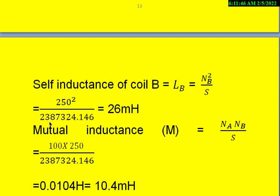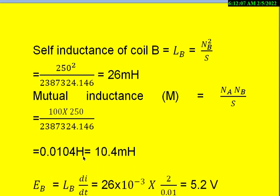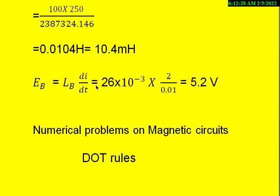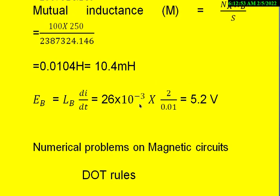So then we get 250 square divided by 2,387,324.146. Then we get 26 millihenries. So then mutual inductance M is nothing but NA, NB divided by S. So NA is nothing but 100 and NB is 250 and S is already known. Substitute that value, then we get mutual inductance between the coils as 10.4 millihenries. So once we know the inductance of the coil B, we can calculate what is the induced EMF in the coil B. That is EB is nothing but LB into dI by dT. And it is given that the change in current in 0.01 seconds is 2 ampere. So substitute that 2 divided by 0.01 and multiply that with the self-inductance of the coil B. That is 26 millihenries. That is 26 into 10 power minus 3. Once we simplify that we get 5.2 volts.